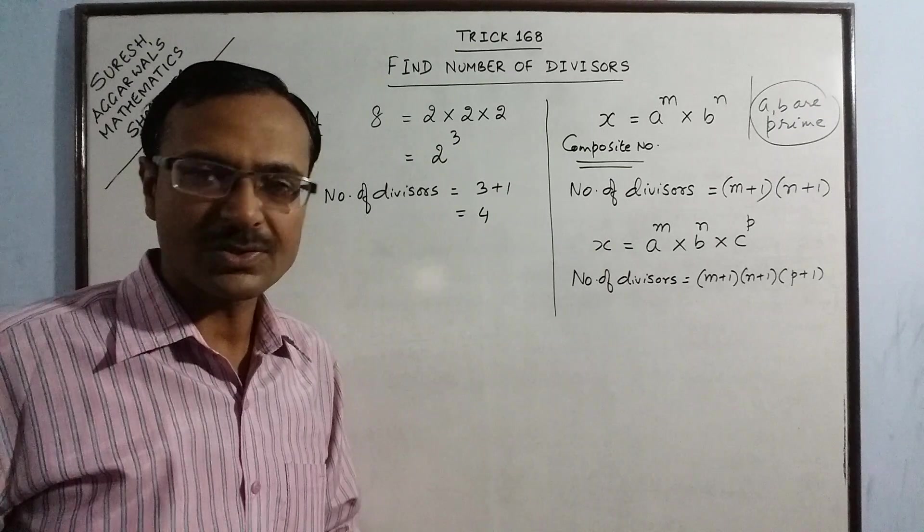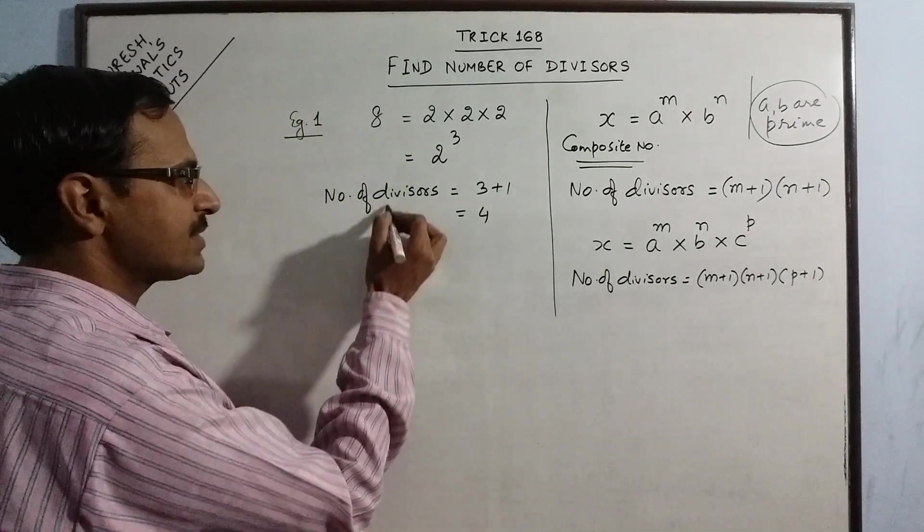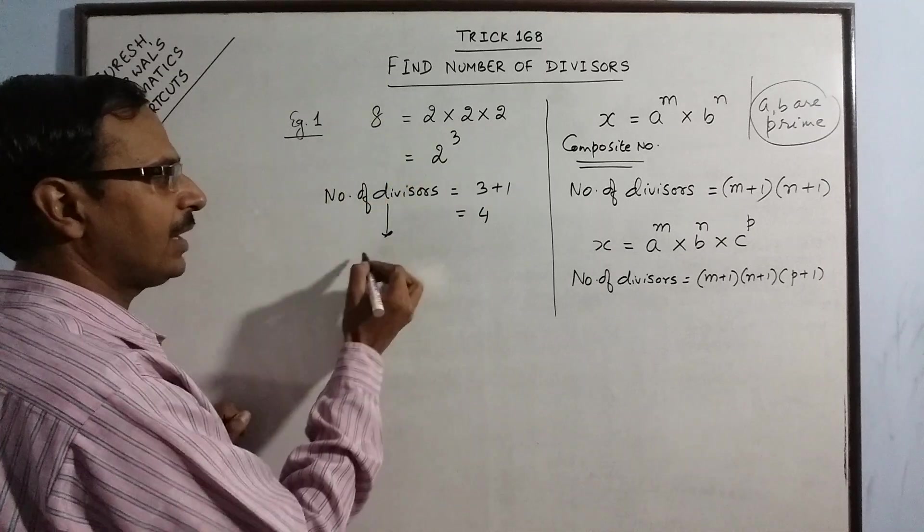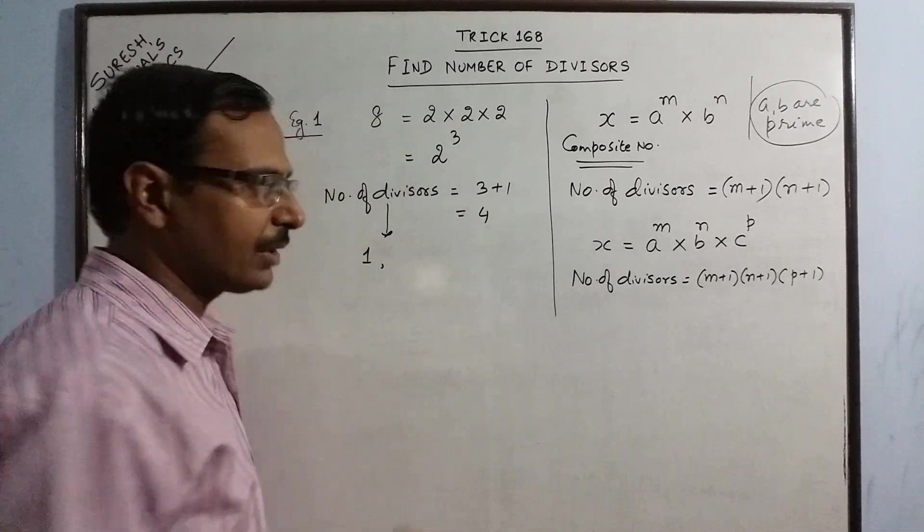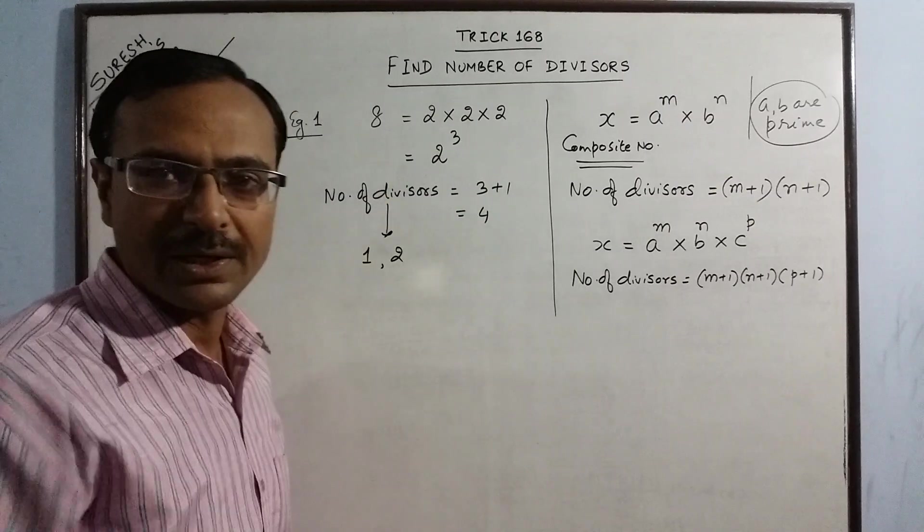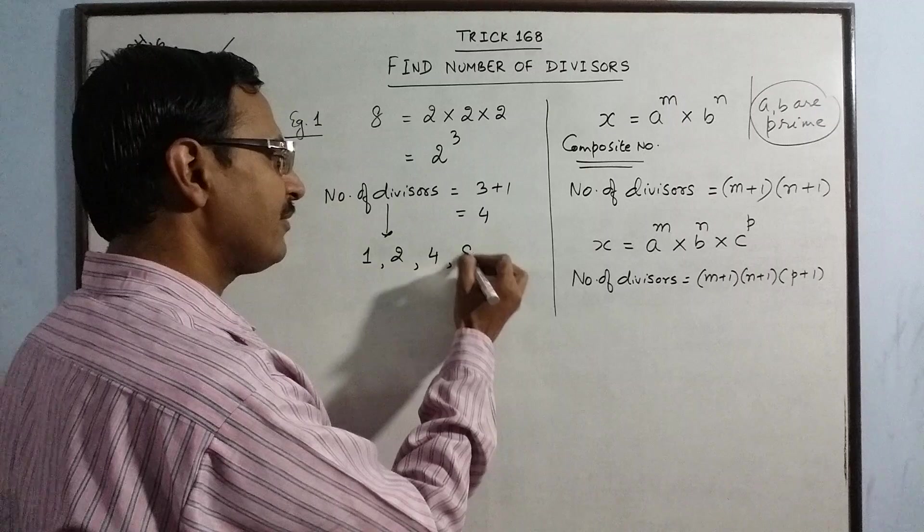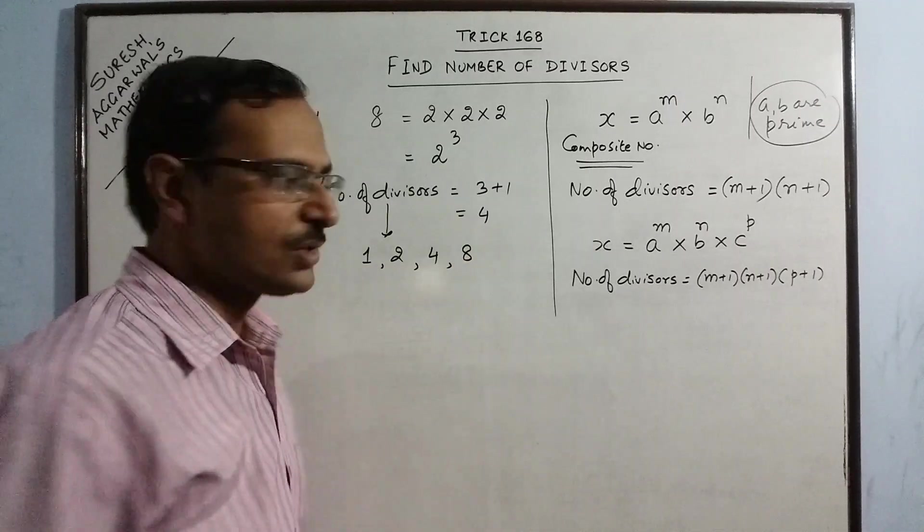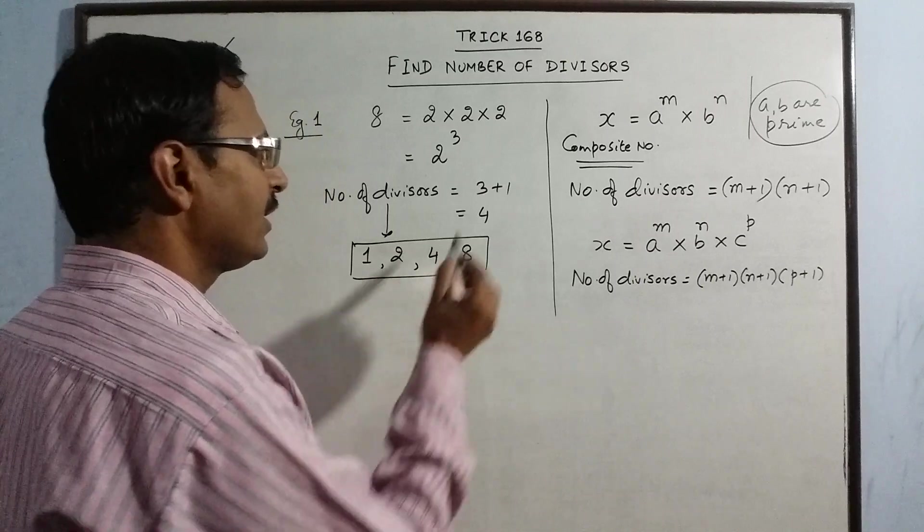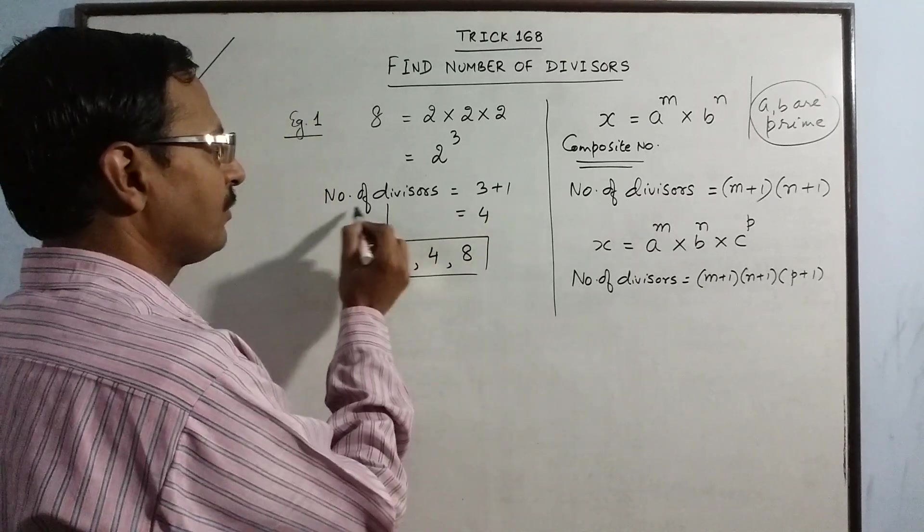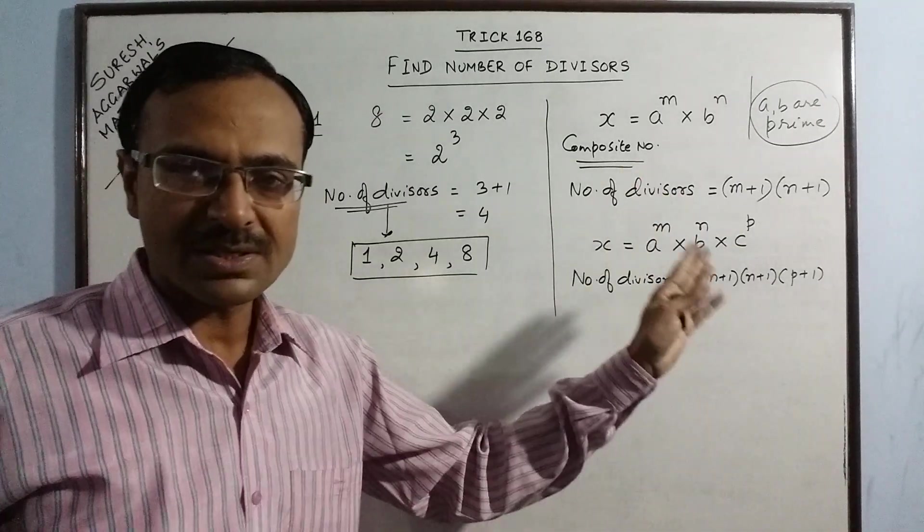So number of divisors of 8 is 4. And which are the divisors? The divisors of 8 are 1. Obviously 1 is a divisor of every number. 2, 2 fours are 8. Then 4, 4 twos are 8. And obviously every number is a divisor of itself. So we have the 4 divisors of 8 as 1, 2, 4 and 8. And this is verified here because the number of divisors is obtained directly by using this shortcut.